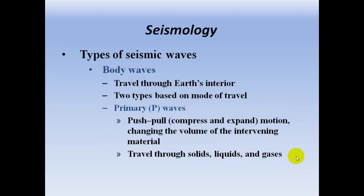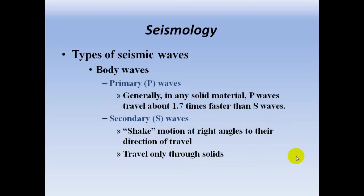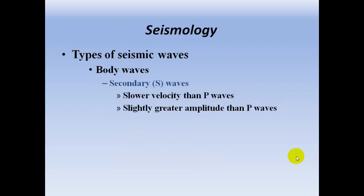Body waves travel through Earth's interior and come in two types based on mode of travel. Primary waves, or P waves, have a push-pull, compress-expand motion, changing the volume of the intervening material. They travel through solids, liquids, and gases, and generally travel about 1.7 times faster than S waves. Secondary waves, or S waves, have a shaking motion at right angles to the direction of travel. They travel only through solids, are slower than P waves, and have slightly greater amplitude than P waves.